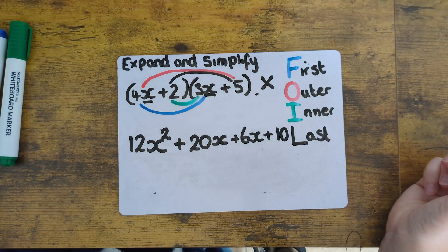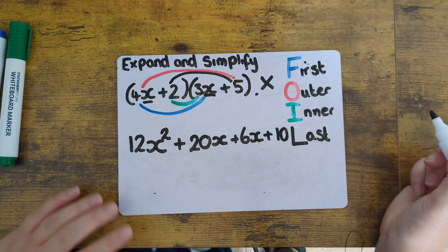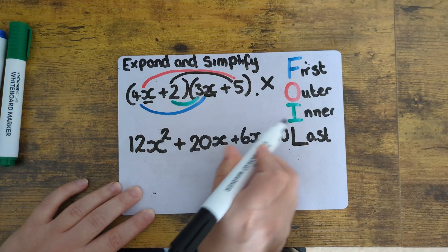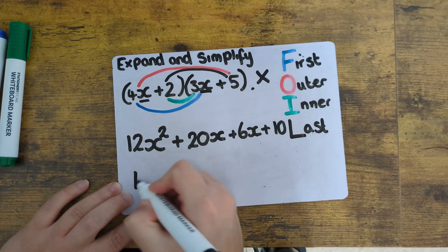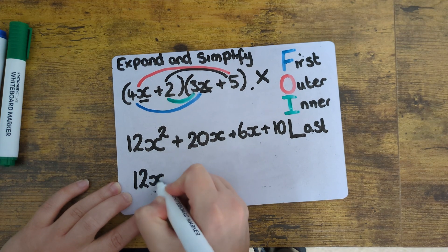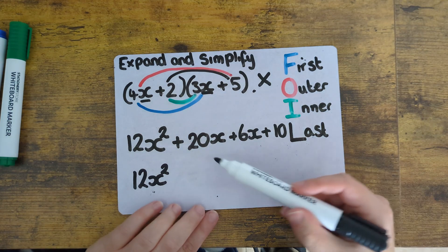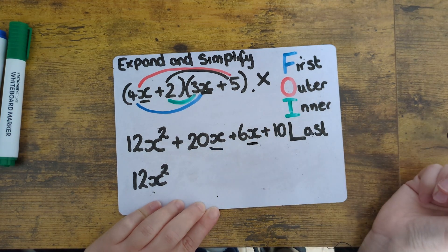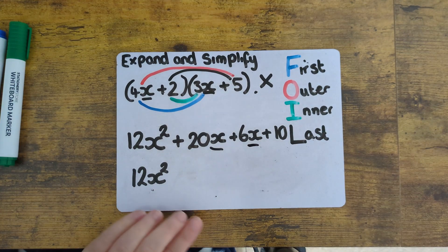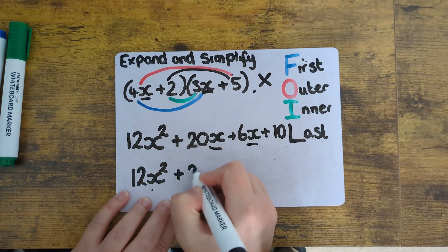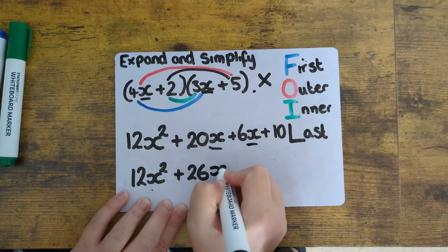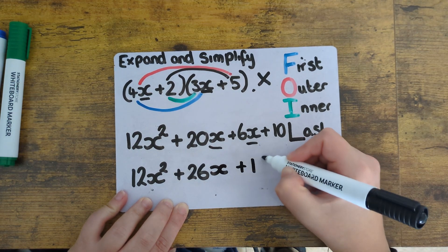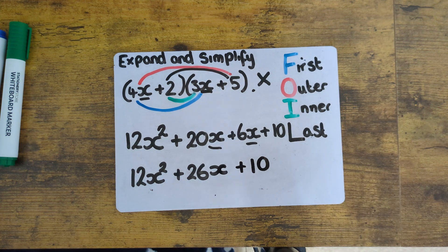Now that the brackets have been expanded, we need to simplify. First of all, this 12x squared can't be paired with anything else — there's no other squares, so that stays as it is. Now this 20x and this 6x can be paired together as they've both got the same letter. So 20 plus 6 is 26, and together that would be 26x. And then finally, this 10 can't be paired with anything, so that stays on its own.